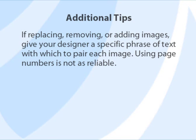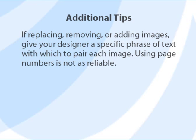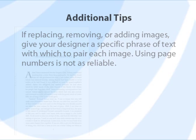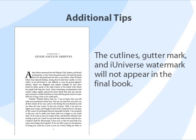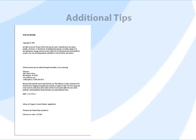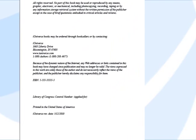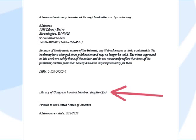If you are replacing, removing, or adding images, please give your designer a specific phrase of text with which to pair each image. This is more reliable than using page numbers, as your text may shift during the corrections process. The cut lines, gutter marks, and watermark visible in your interior will not appear in the final book. If you have purchased a Library of Congress control number, this number may not appear in your interior until after the book has been submitted to the printer. This is the only item that will be added to your book after you have approved it.